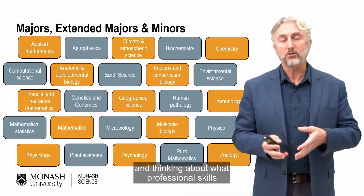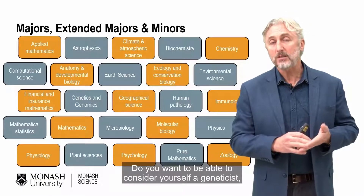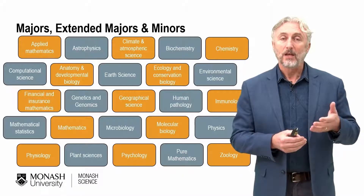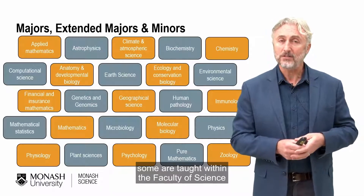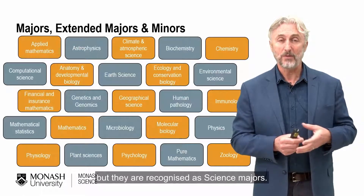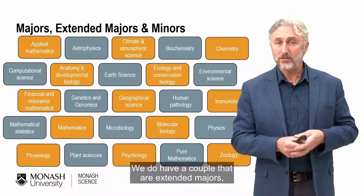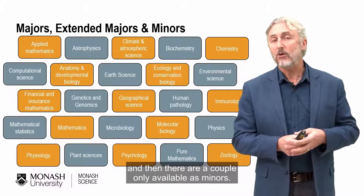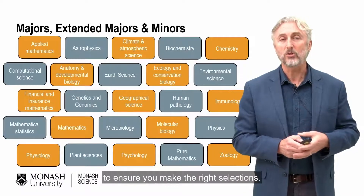Think about what professional skills you want when you finish university and seek employment — do you want to consider yourself a geneticist, an environmental scientist, an immunologist, and so on? Some majors are taught within the Faculty of Science and some by other faculties, particularly the Faculty of Medicine, Nursing and Health Sciences, but they are recognised as science majors. A couple are extended majors requiring more credit points, and there are a couple only available as minors. The handbook is your source of information to ensure you make the right selections.